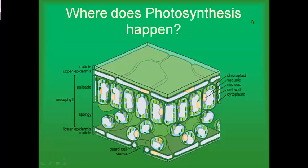To give you another view, if I draw a leaf with the bottom facing out, there would be all these tiny holes. Through these holes, water comes out if the plant has too much, and carbon dioxide comes in — we call those stomata. So basically, photosynthesis happens inside the leaf in the palisade cells. Light comes through the top and is captured by the chloroplasts. Carbon dioxide comes in through the stomata and goes into the palisade cells, and then photosynthesis happens.